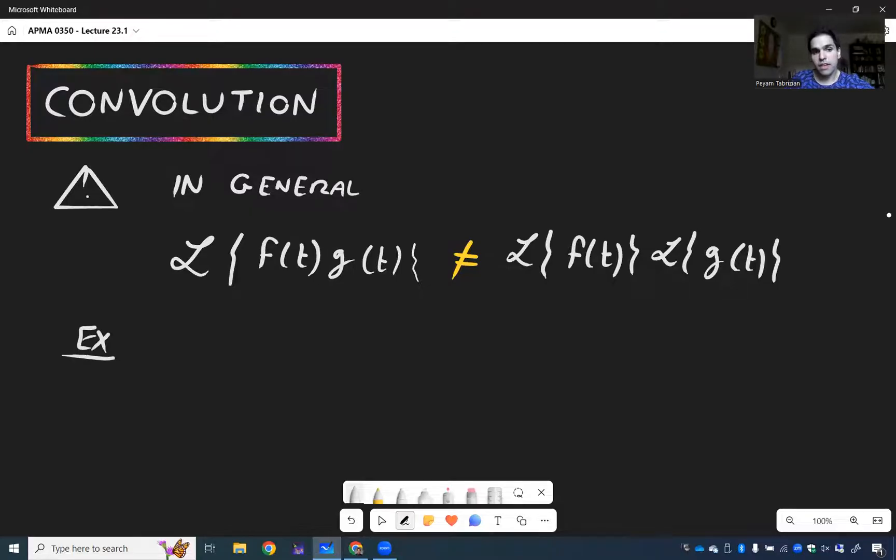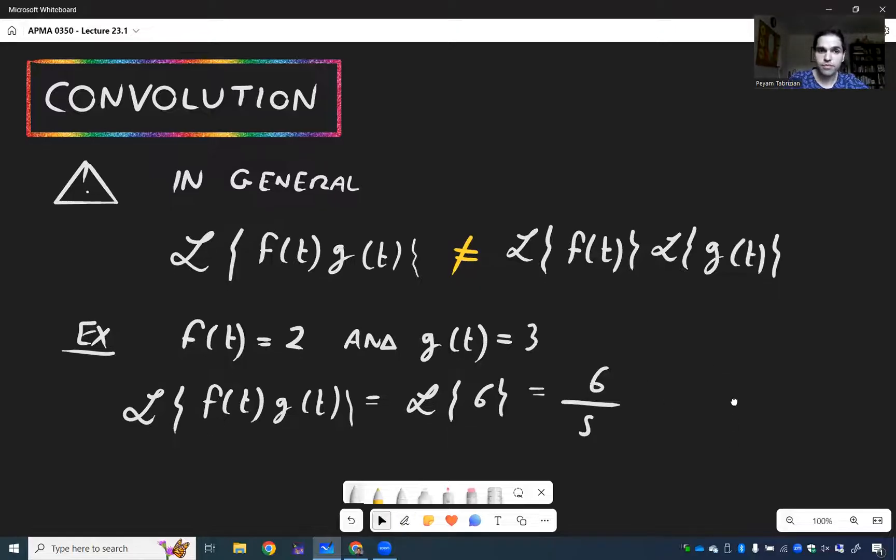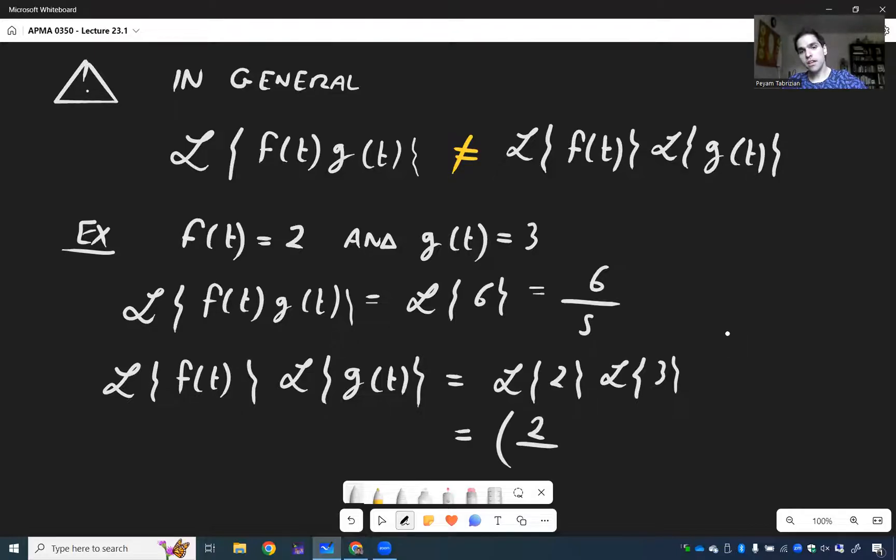So in general, Laplace of f times g is not Laplace of f times Laplace of g. In fact, very quick example, let f of t be 2, so the constant function 2 and g of t be 3. Then, the Laplace of f times g, that's the Laplace of 2 times 3, which is the Laplace of 6, which gives you 6 over s.